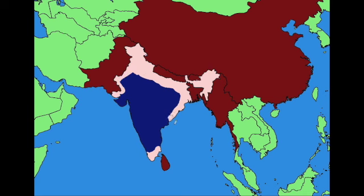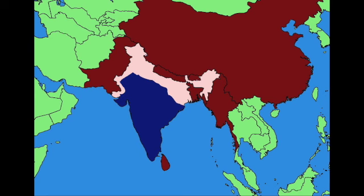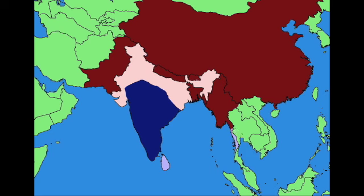As India starts losing more and more land, they launch their final counter-offensive, because they're basically out of manpower. Nobody is sending them supplies either, and most of their infrastructure for producing supplies has been destroyed.